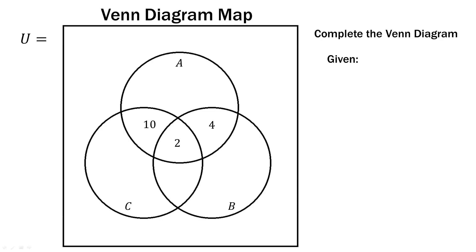In addition to what we're given in the regions, we are also given some more information. The first thing we're told is that the number of elements in the entire universal set must add up to 50 — so everything within that square must add up to 50. We're also told that the number of elements in A must add up to 20. We're given part of A already, because the 10, 2, and 4 are part of A, so we can use that information to fill out the missing part.